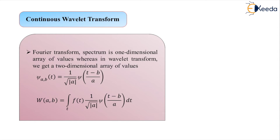The transformation is computed at various locations of the signal and for various scales of the Wavelet, thus filling up the transform plane. When the process is done in a smooth and continuous fashion, the transformation is called the Continuous Wavelet Transform. If the scale and position are changed in fixed discrete steps, the transformation is called the Discrete Wavelet Transform — and we will continue working with the Discrete Wavelet Transform for digital applications.